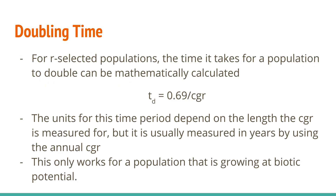Anytime a population is growing exponentially — mostly for r-selected populations, but also when k-selected populations are growing at biotic potential and are well below carrying capacity — we can mathematically calculate how long it will take for a population to double in size. We use the per capita growth rate: doubling time equals 0.69 divided by the per capita growth rate. We call this the Rule of 69s. You may also see the Rule of 70 or Rule of 72, often used in economics, but we typically stick to the Rule of 69s in biology.